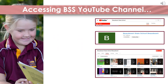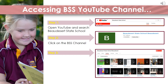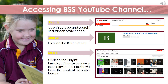In support of the virtual classroom, we are also using a Beaudesert State School YouTube channel. To open the YouTube channel, open YouTube in your browser, search 'Beaudesert State School,' and click on the Beaudesert State School channel option. Once you're in the channel, look along the top for the heading that says 'Playlists.' Click on playlists and that will bring up a list of all the year levels at Beaudesert State School. Click on your year level to see the lessons that teachers have uploaded for you to watch.